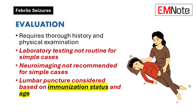There are key exceptions. Children between 6 and 12 months who haven't finished their vaccinations for those bacteria should have an LP — we need to be more cautious in those who might not have full immunity yet. Also, if a child is already on antibiotics when the seizure happens, we can't always rely on the exam to rule out meningitis, as those antibiotics might be masking some of the signs. So an LP is a good idea in that case.